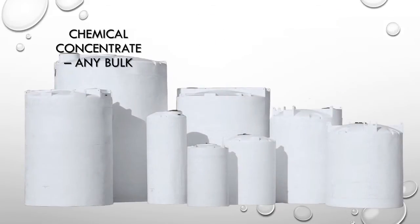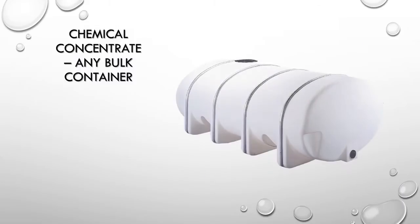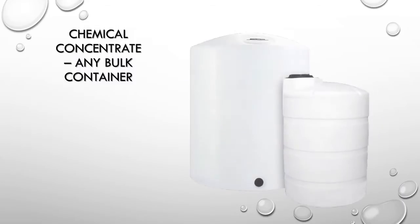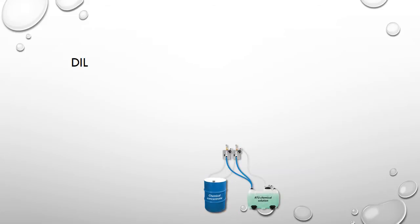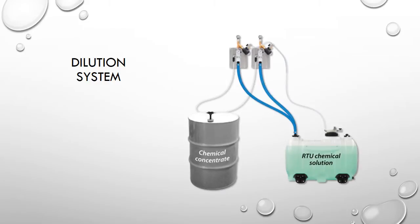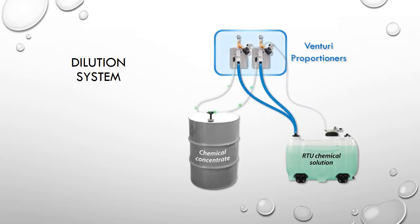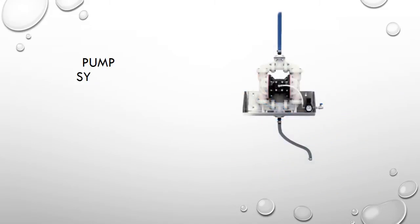Everything begins with the concentrated chemical, which can be stored in any bulk container. The dilution system maintains a supply of ready-to-use chemical solution. One or more Venturi proportioners draw chemical from a bulk container and dilute it with water. The solution flows to a holding tank, and when more solution is needed, a float valve reactivates the dilution process.